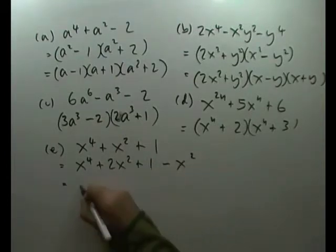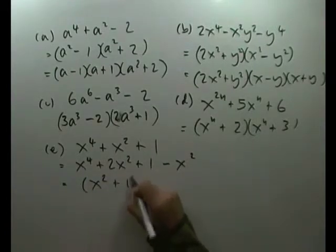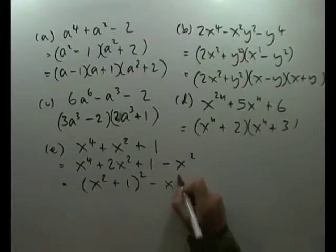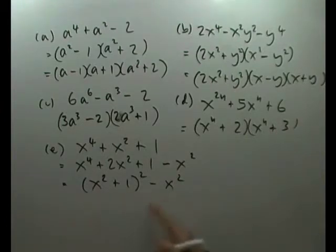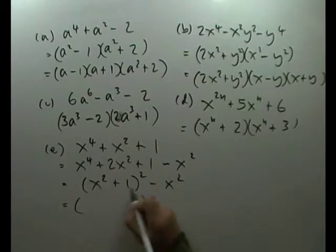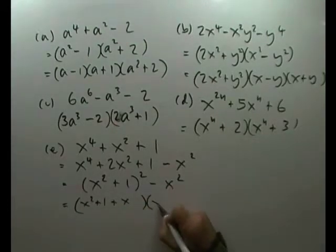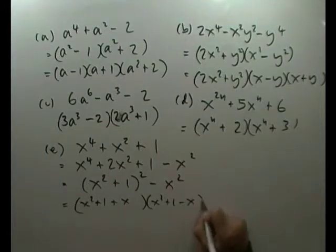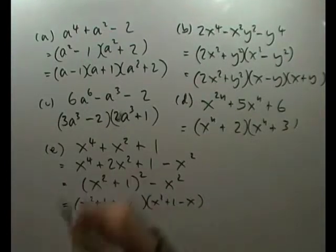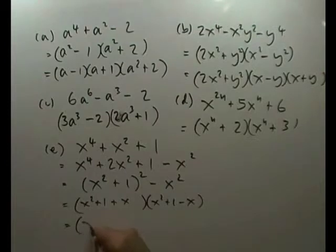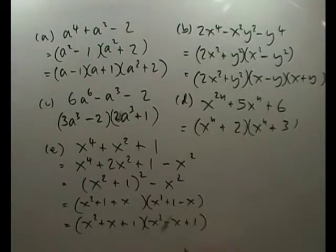Now this will factorise quite nicely into x squared plus 1 all squared minus the x squared. And I've now got the difference of two squares. So that would be x squared plus 1 plus the x. x squared plus 1 minus the x. Or rearranging them into well-known phrases. x squared plus x plus 1. x squared minus x plus 1.